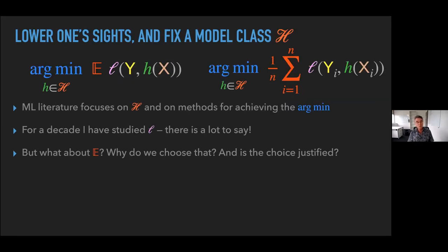That's too hard, so you lower your sights. You don't try to do it over all functions, but over that model class H. And even that's too hard, so you replace the expectation by a sum. The vast majority of the ML literature focuses on H — different choices for H and mechanical procedures for finding the argument. I've spent a lot of time studying L, the loss function. But what about E? Why do we choose that, and is the choice justified?